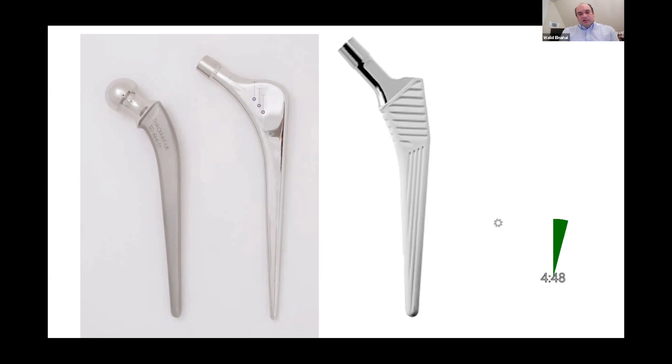To the right, the uncemented ones, they rely on biological fixation to the bone, so they either have pores for bone ingrowth or they have rough surfaces for bone ongrowth. With this one, this is the Corail stem, I believe, which is one of the most commonly used stems in the UK.